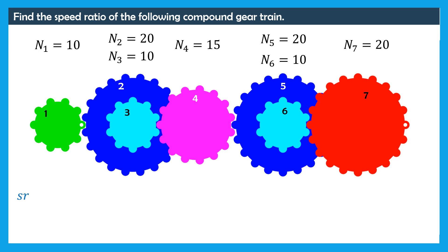The speed ratio of this compound gear train is given by the ratio omega 7 over omega 1. Omega 7 is the speed of the output gear, or gear 7. Omega 1 is the speed of the input gear, or gear 1. To calculate the speed ratio, we need to expand the fraction to include the speeds of the intermediate gears.